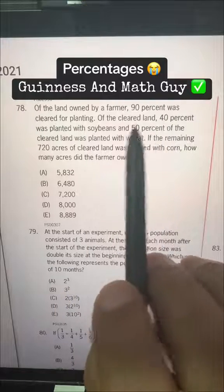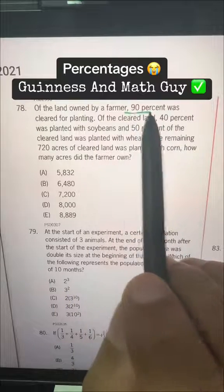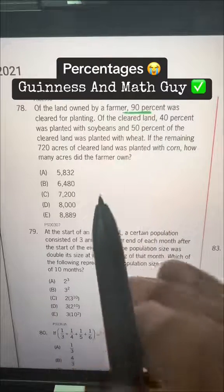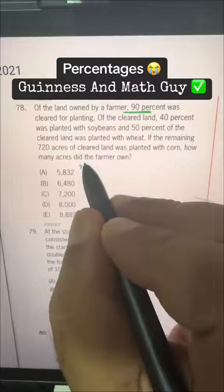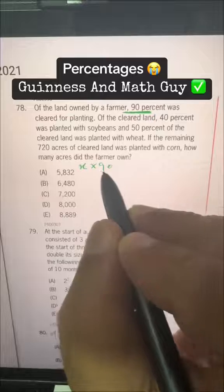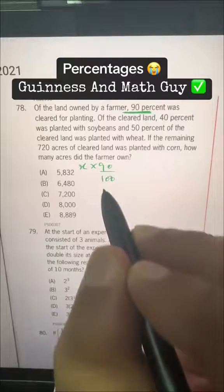So 40 plus 50, 90% of the cleared land, that is also 90% of the total land. So let's say total land is X and 90% of that is this one.